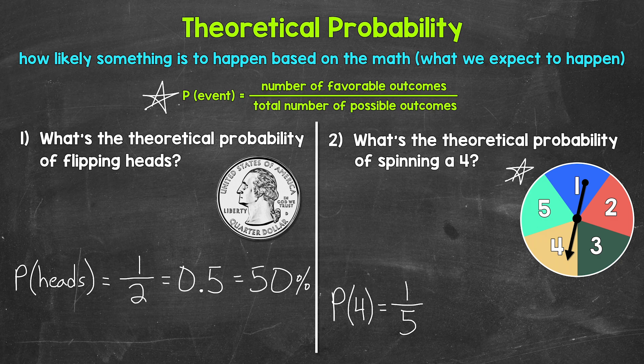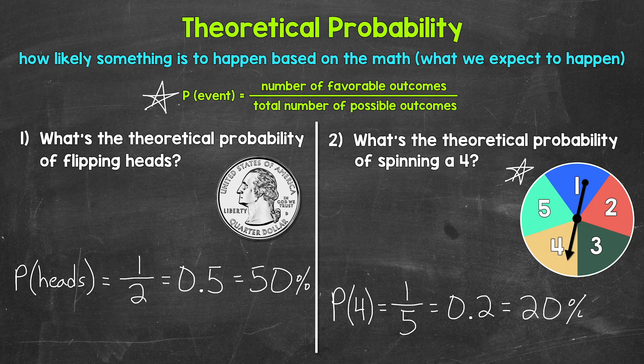Let's write this as a decimal and a percent as well. For the decimal, we do 1 divided by 5, which gives us 0.2. Then we multiply by 100 for our percent — move the decimal twice to the right — giving us 20%. So we have a 20% chance of landing on a 4. That's the theoretical probability of landing on a 4, the likelihood based on the math.